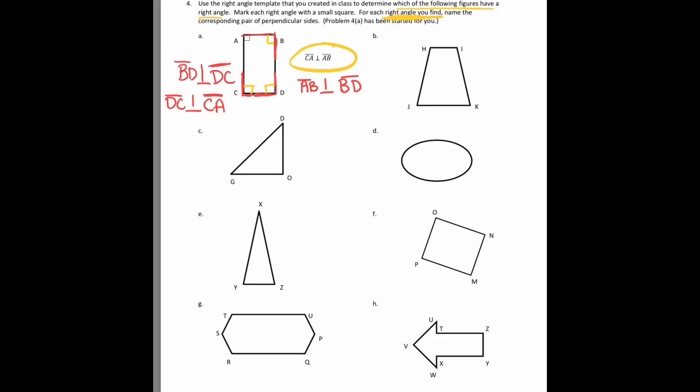On example B, if we look, there's no right angles. We have two obtuse angles and two acute angles, which means there's no right angles, which means there are no perpendicular sides on this trapezoid.